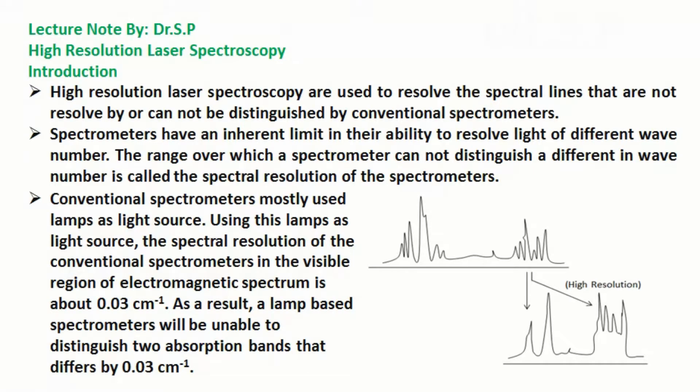Conventional spectrometers mostly use lamps as light source. The spectral resolution of conventional spectrometers in the visible region of electromagnetic spectrum is about 0.03 per cm. As a result,